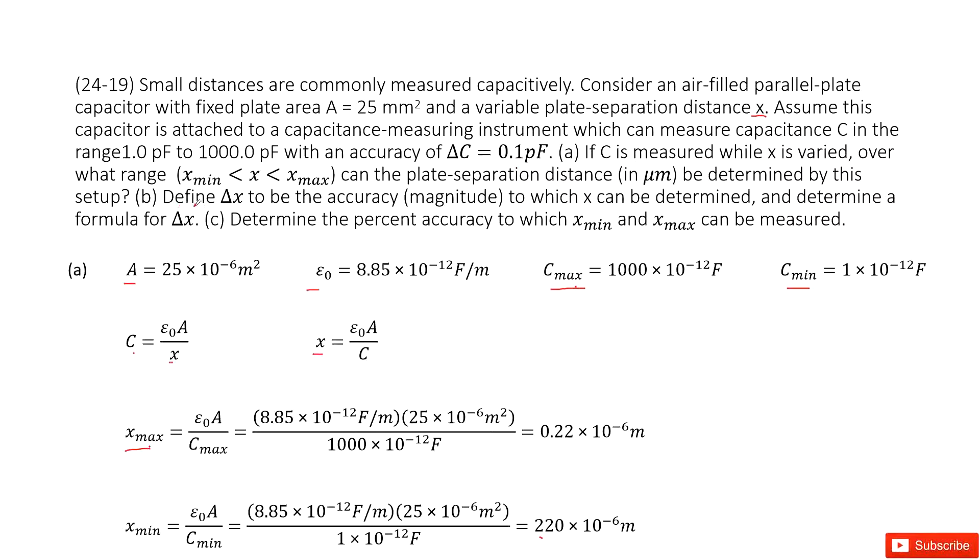We look at part B. Define delta x to be the accuracy to which x can be determined, and determine a formula for delta x. So it looks like we need to find a formula for delta x. How can we do that?